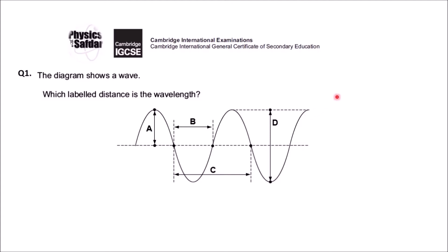Let's recall the definition of wavelength. In simple terms, wavelength is the length of a wave. Look at this diagram — it's one complete wave starting from this point. Remember: wavelength is actually a horizontal distance — the horizontal distance of a complete wave from start to this point. This horizontal distance is called wavelength.